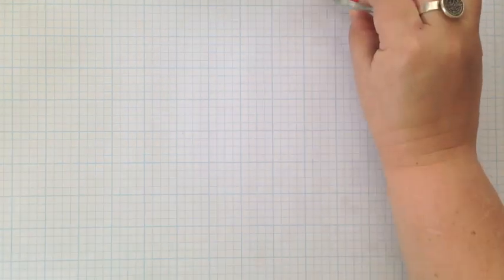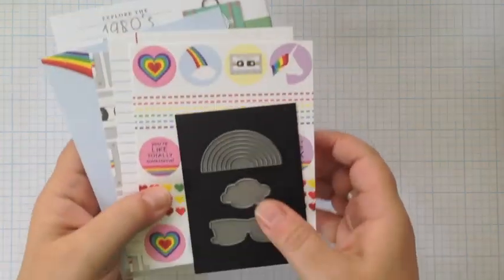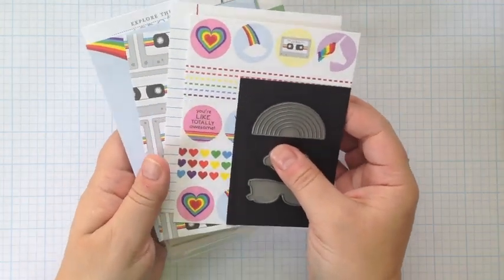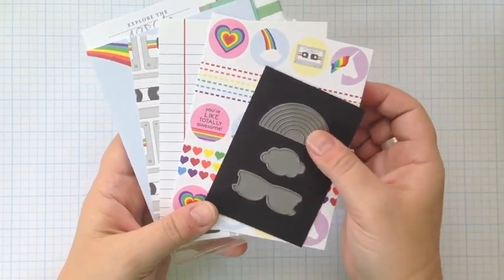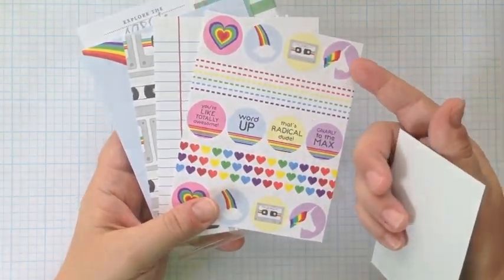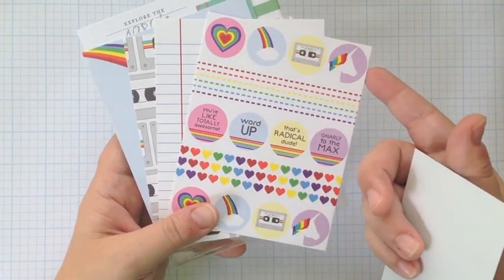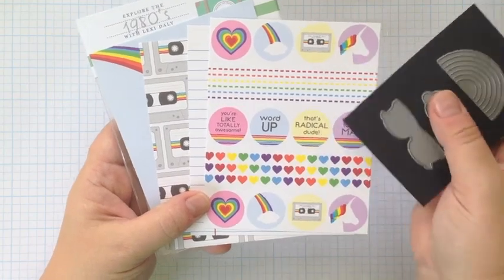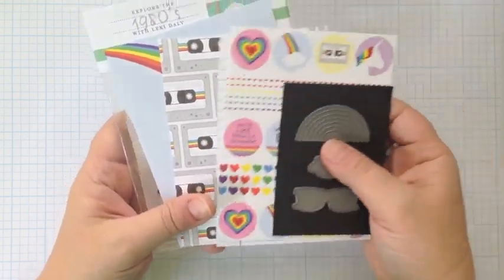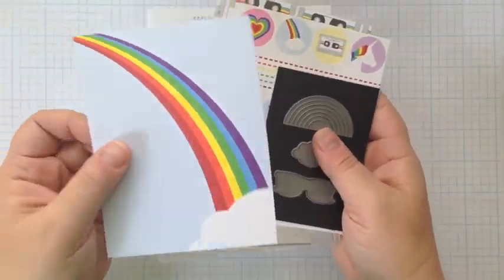So let's push these things out of the way. These rainbows are really what inspired my 1980s kit. You have a rainbow that you can die cut, you've got sticker shapes to punch out, a couple of different patterns, cassette tapes, and then a whole rainbow page.